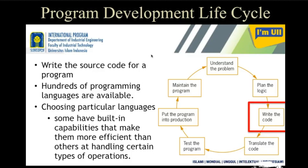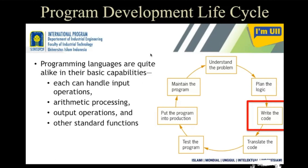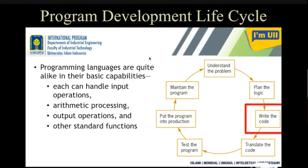Depending on those criteria, you choose a particular language and apply it to your planning, then execute it. Programming languages are quite alike in their basic capabilities — all of them handle input, processing operations, output operations, and other standard functions. Each language has the same core capabilities, though one language may handle something in one way and another in a different way, but most provide the facilities you need to write the code.